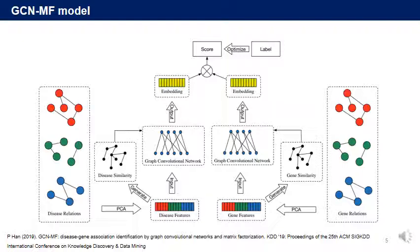To capture unknown nonlinear associations between disease and genes, we apply a multi-layered graph convolutional networks model. To avoid information loss in deep layers, we combine a model with shallow layers with another model with deep layers.